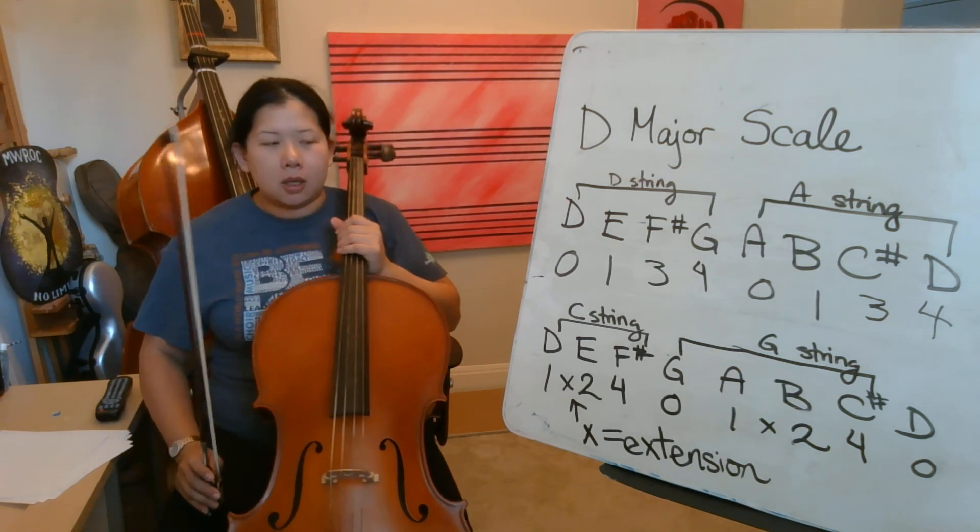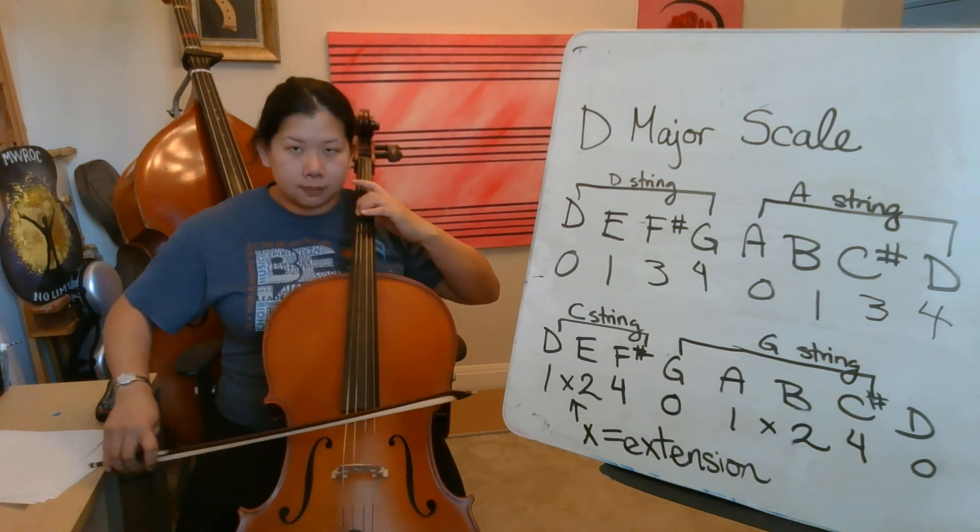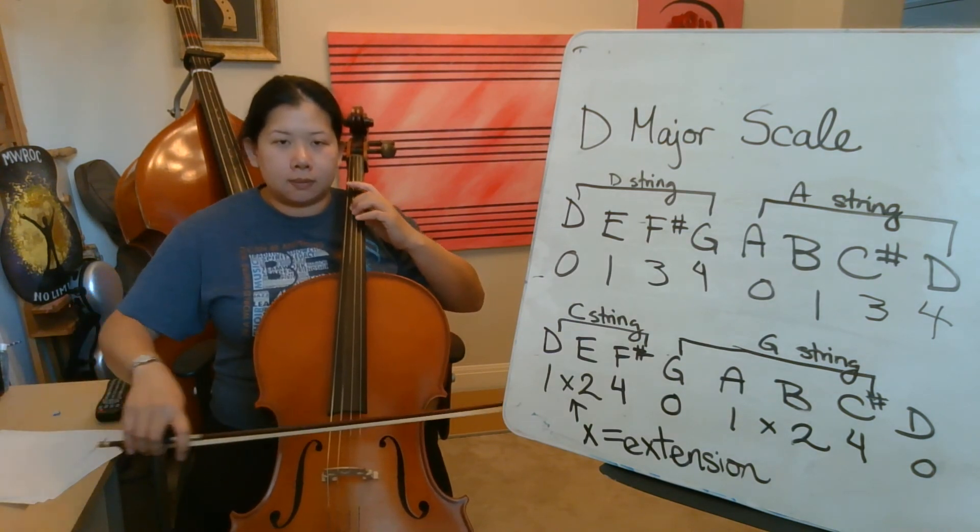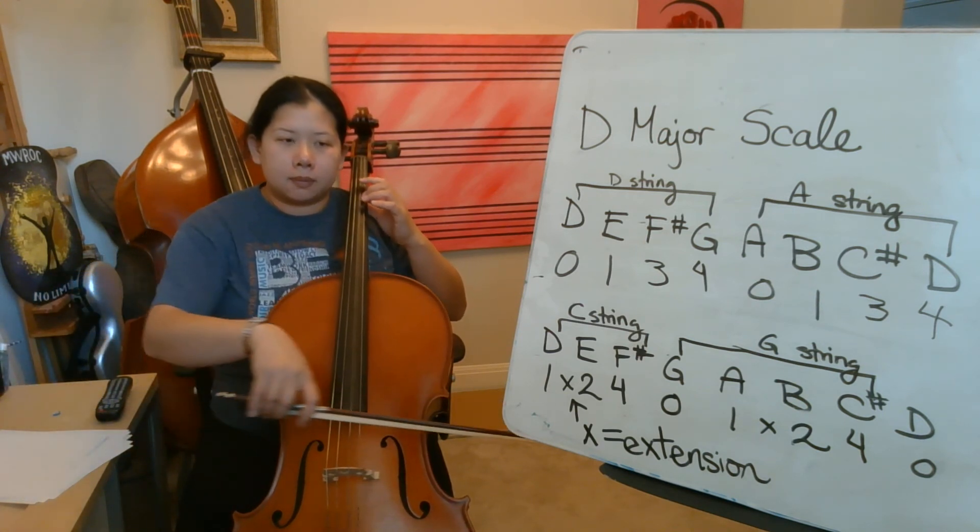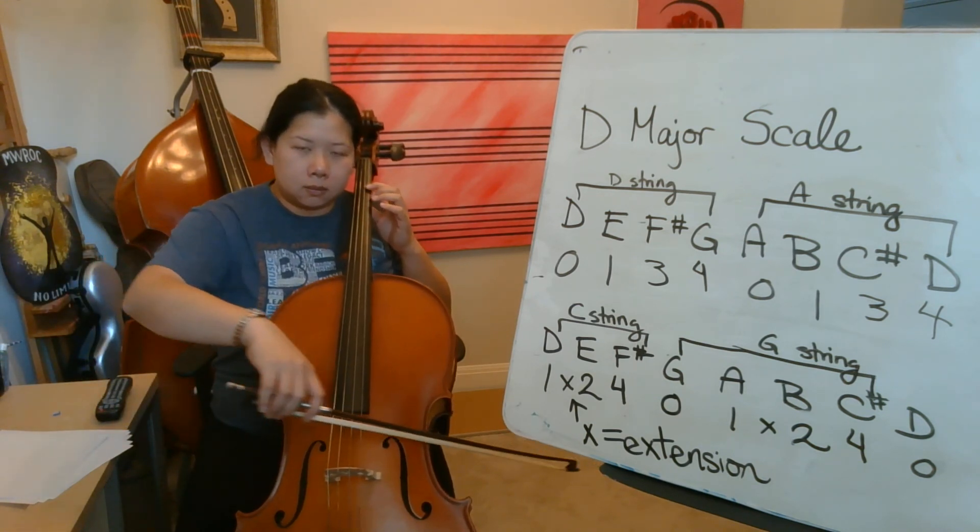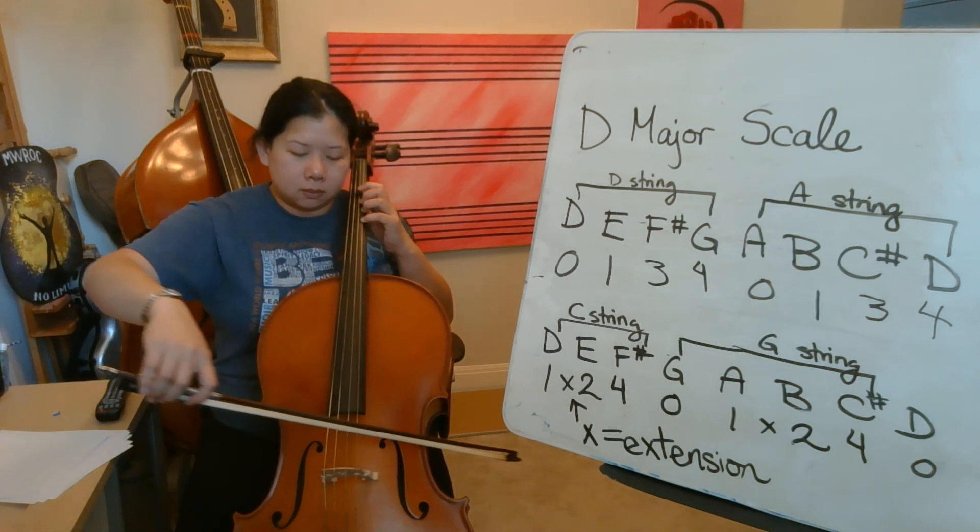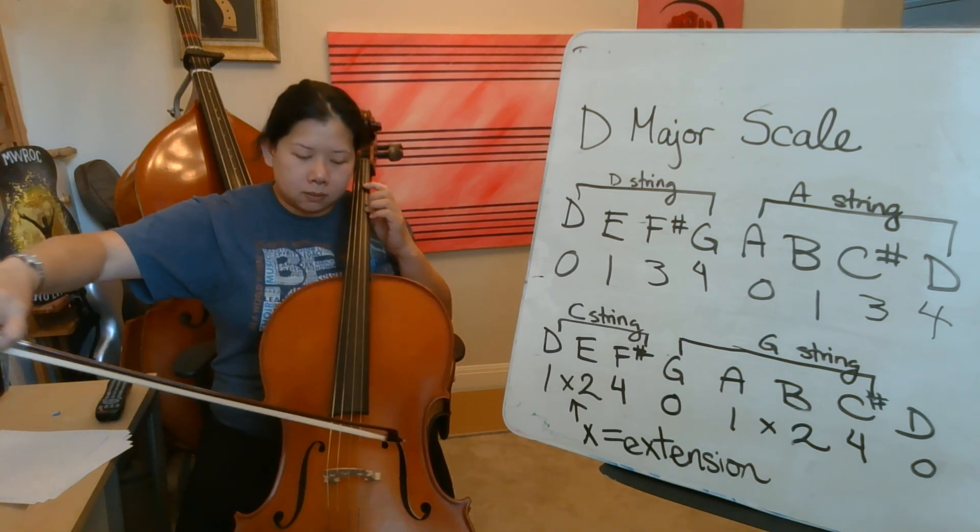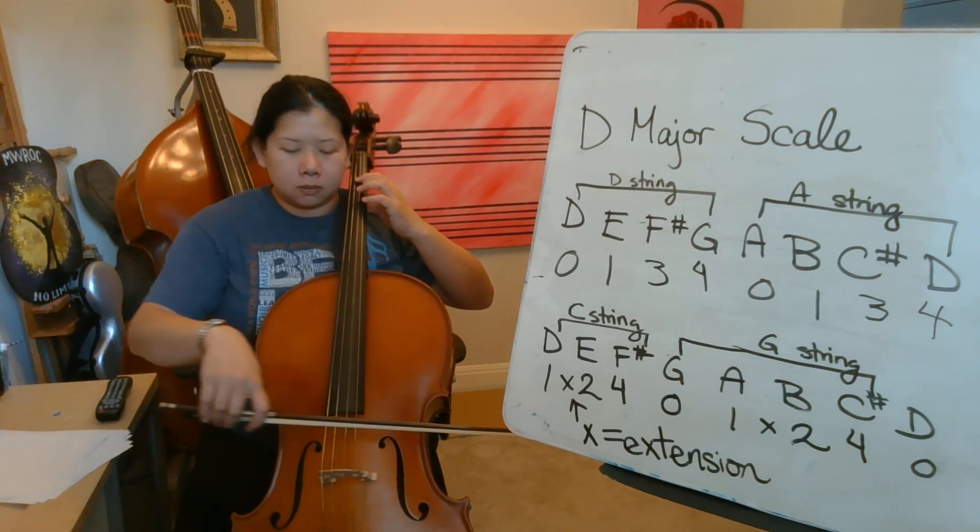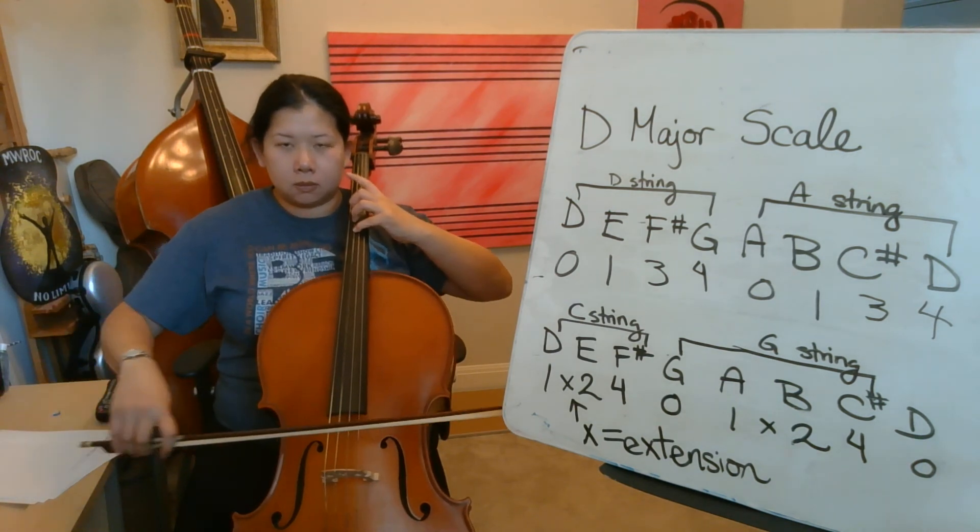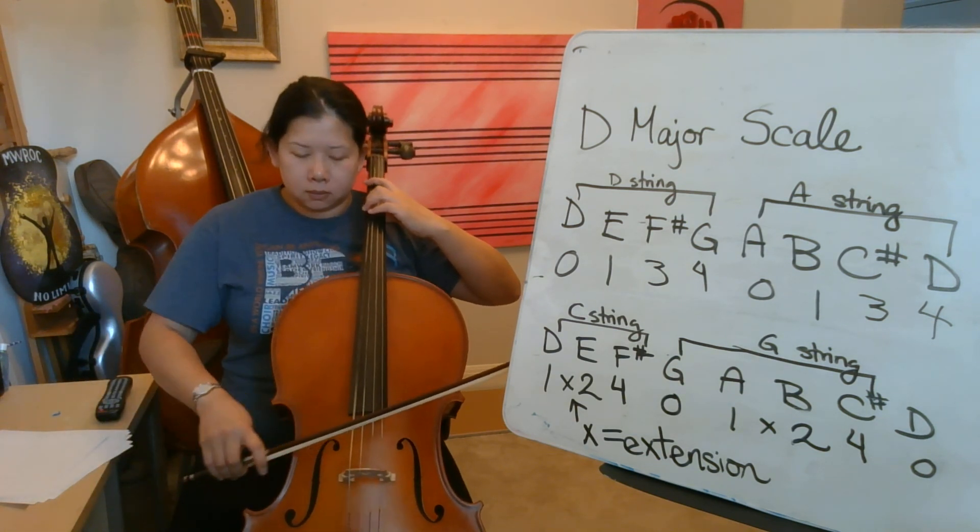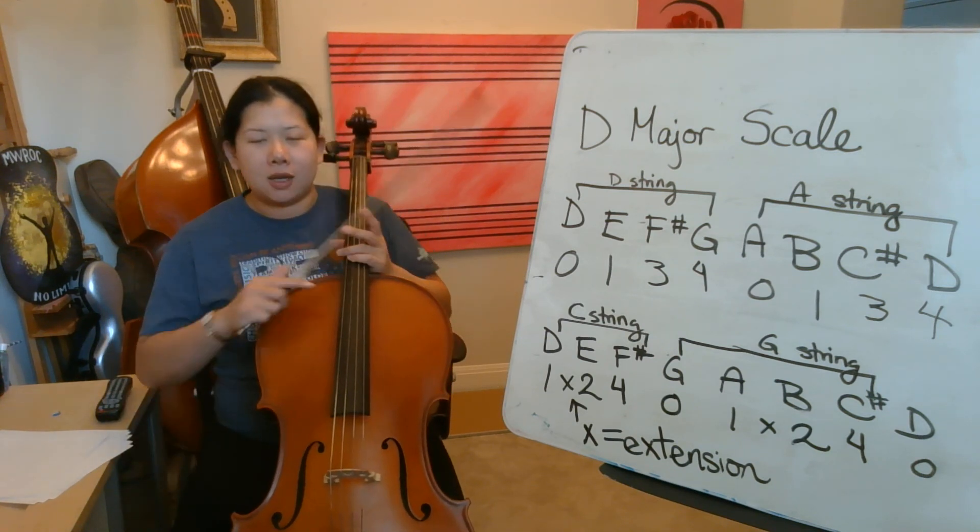Alright, this time you're going to play it and you're going to say the note names out loud. I'm going to scoot back more so you can see my bow direction. One, two, lower the string, the higher it will be. One, two, ready, go. And that's it. Thank you. Bye.